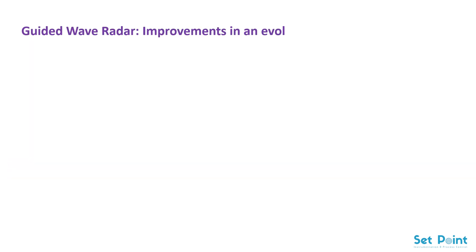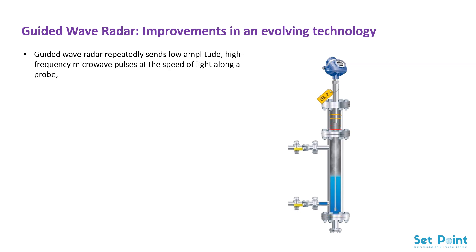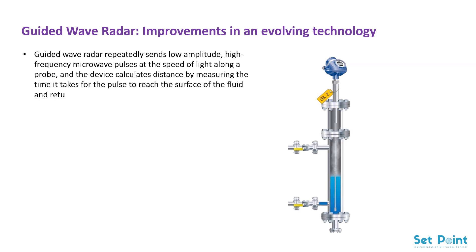Guided wave radar — improvements in an evolving technology. Guided wave radar repeatedly sends low-amplitude, high-frequency microwave pulses at the speed of light along a probe, and the device calculates distance by measuring the time it takes for the pulse to reach the surface of the fluid and return.